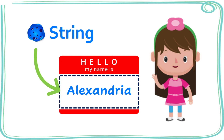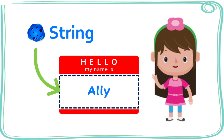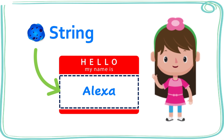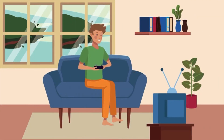Just like all variables have values that can change, or vary, a person's name can change too. Do you have any nicknames? Maybe your family or friends all call you something different. No matter what someone calls you, you still have a name. The value of your name can change, but it won't change anything else about you.